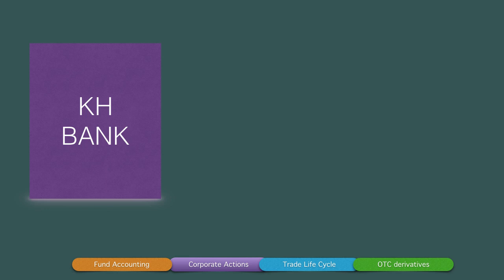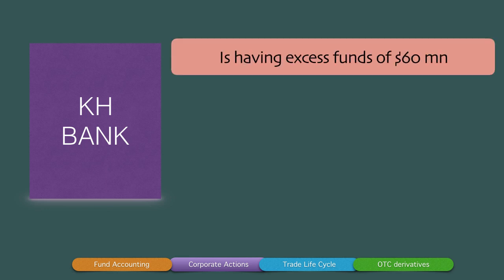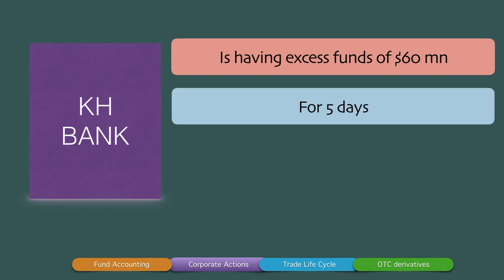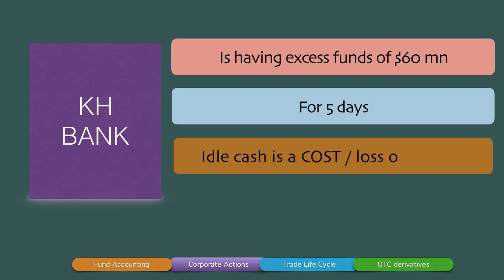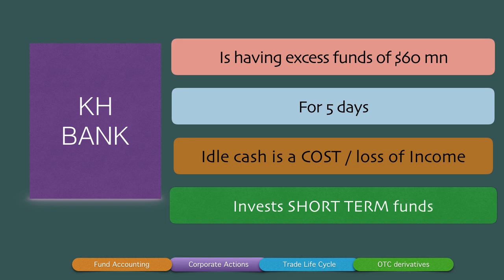On the other hand, somewhere in the same universe is a bank called KH Bank, and KH Bank is having excess funds of about $60 million. KH Bank does not see any immediate use of these funds, so it's looking to explore investment opportunities for about five days. Idle cash for KH Bank is a cost — it means they have not put their funds to use, and therefore it's a loss of income for the bank. So KH Bank is looking to invest this money in short-term money markets.